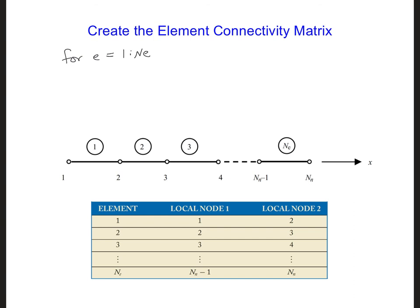Then if we look for a pattern in the global node numbers relative to the element numbers, we might recognize that the first node of the element is the same as the element number. So I'll write elm connectivity e1, so the first value there for the second index, will be equal to e.